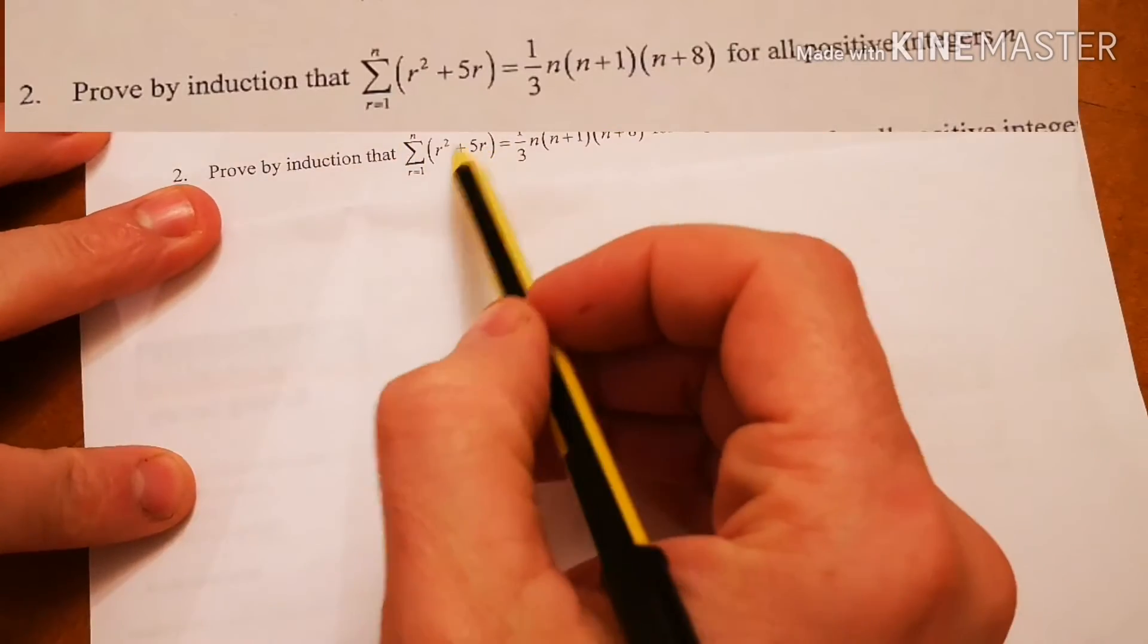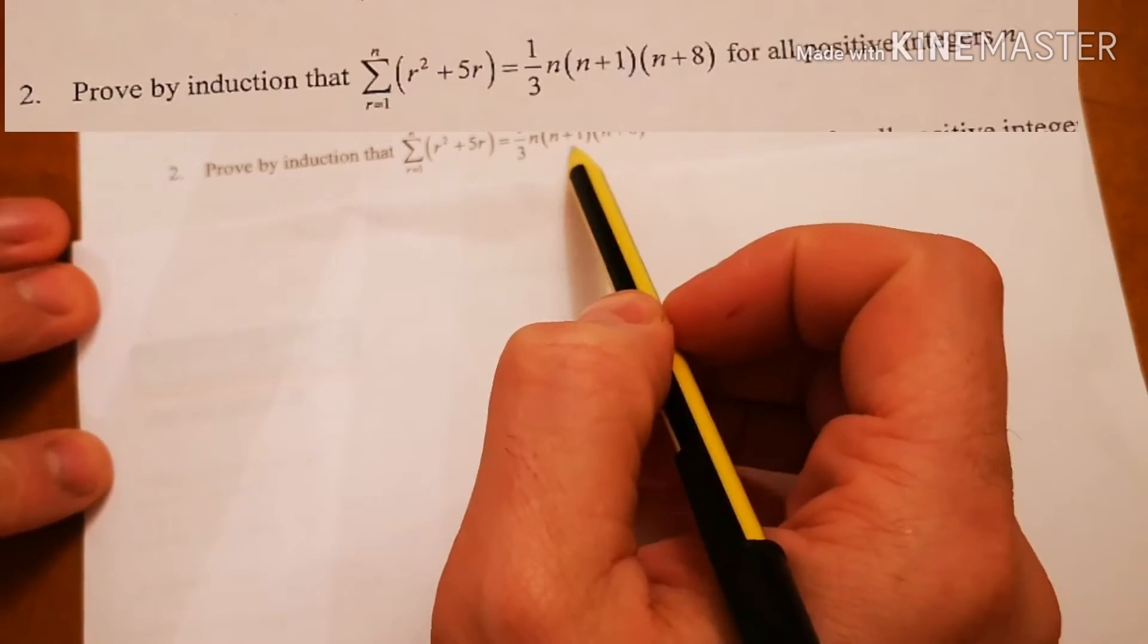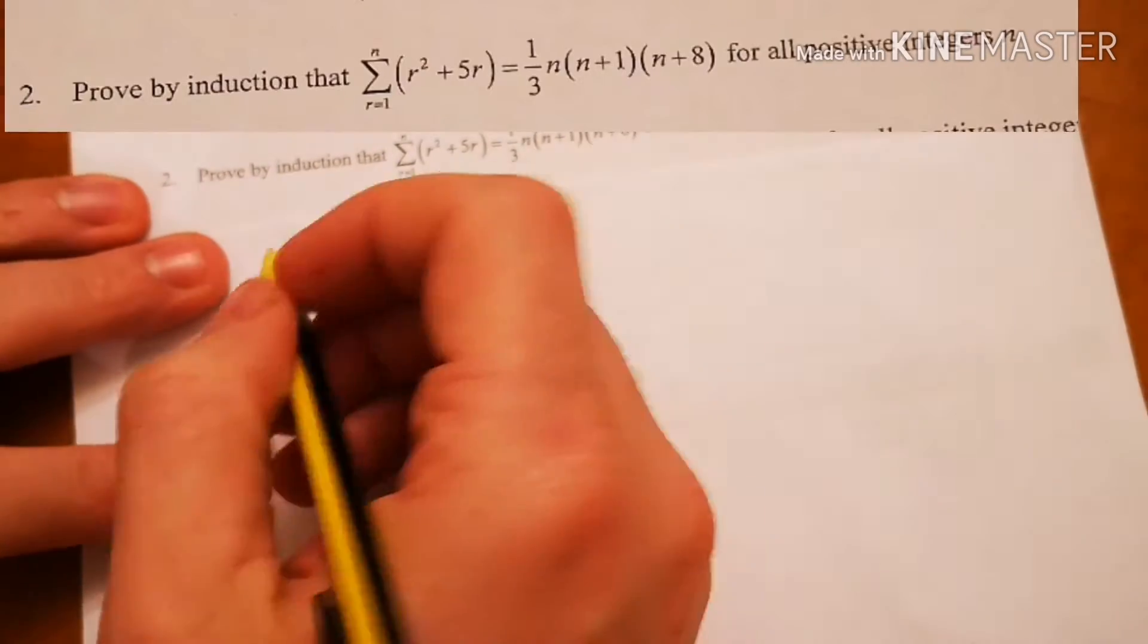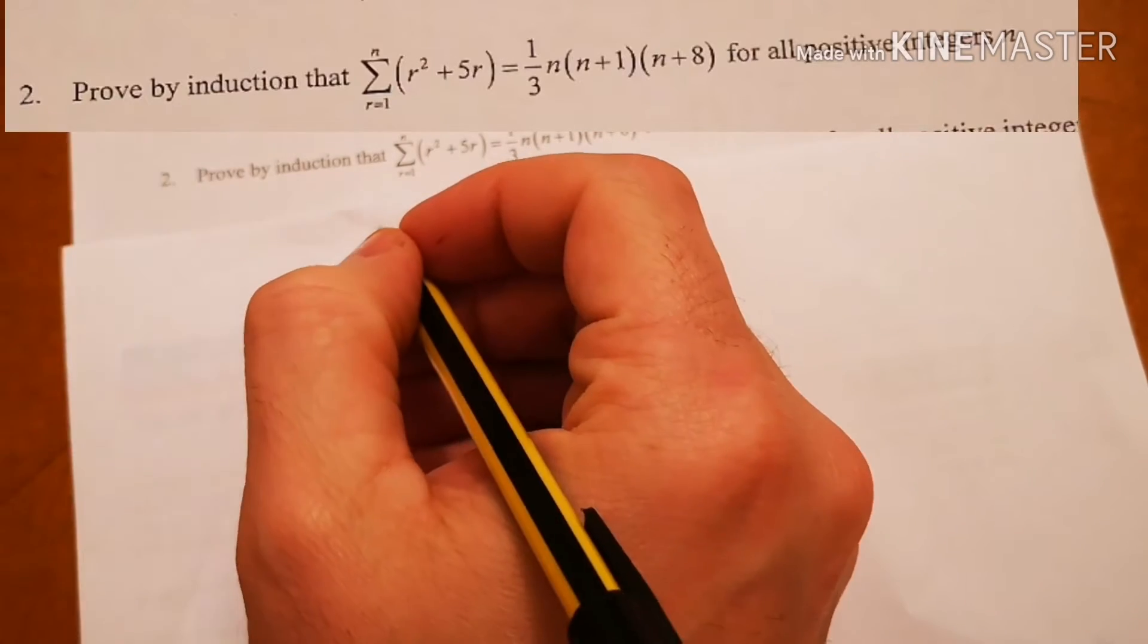Proof by induction that the sum of the sequence r squared plus 5r from 1 to n is equal to a third n bracket n plus 1 n plus 8 for positive integers. Right, so let's first do it for n equals 1.